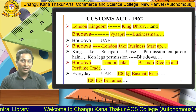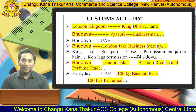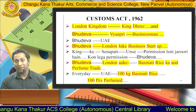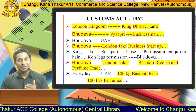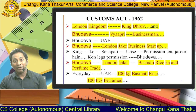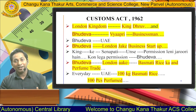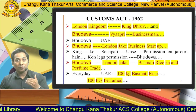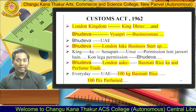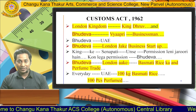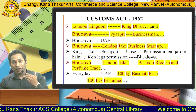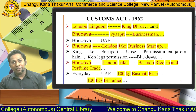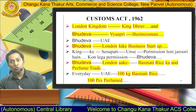Once upon a time — ek purane zamane ki baat hai — there was the London Kingdom ruled by King Dhruva. Bhudeva was a Vapari, which stands for a Businessman, and this Bhudeva was from UAE — United Arab Emirates. Bhudeva wanted to do business from UAE to London, to explore and start up his business, and accordingly he came to London.